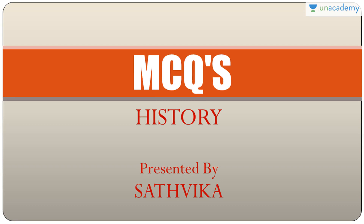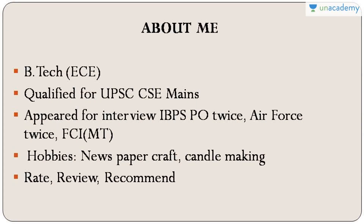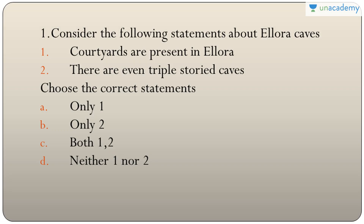Welcome back. This lesson covers MCQs from cave architecture and temple architecture. First question: statements about Ellora caves — courtyards are present, and there are even triple-storied caves. Both are true. Since Ellora was built on a slant slope, construction of courtyards is possible. The answer is C — both one and two.